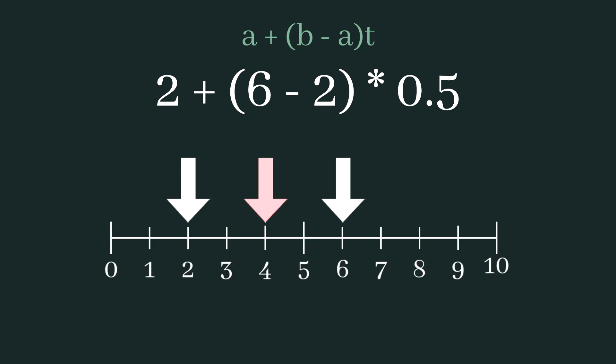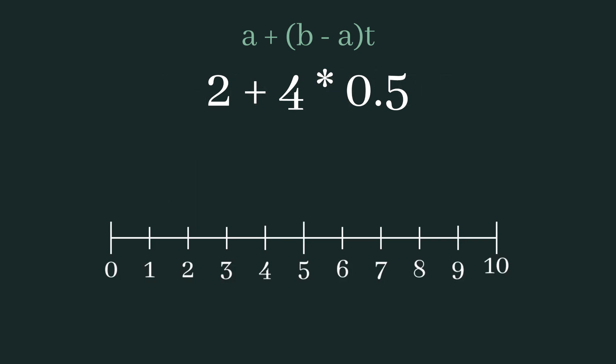We are first required to subtract 2 from 6. This will determine the distance between the start and end values. The result of this is of course 4, but I'll also represent this quantity as a red bar on the number line, starting from 0. The next thing we need to do is multiply the 4 by 0.5, which is the percentage. This has the effect of scaling the value of 4 to half its size, so it would become 2.